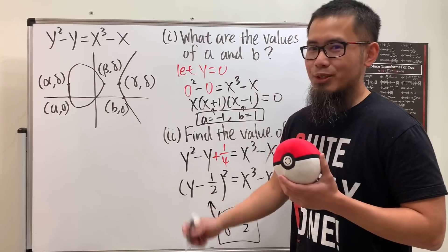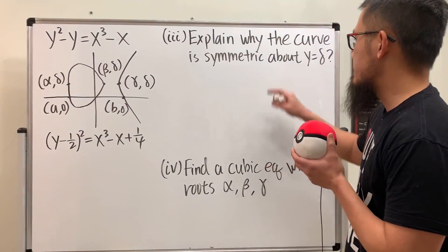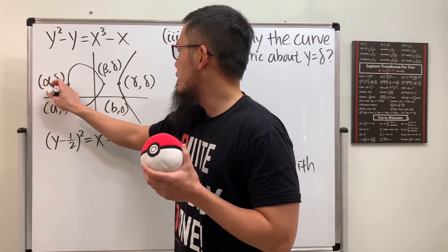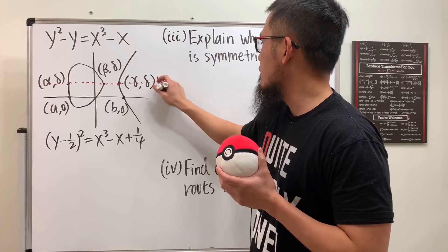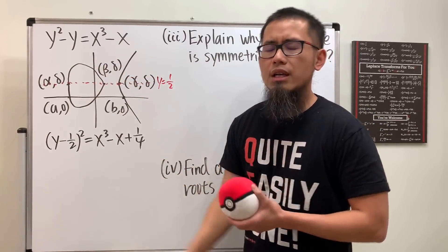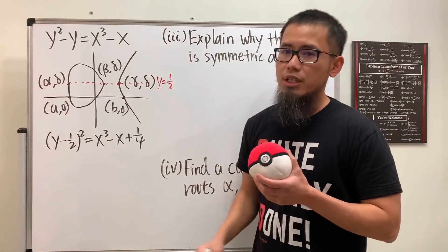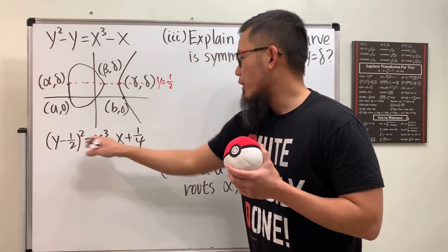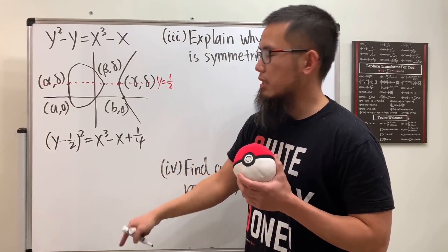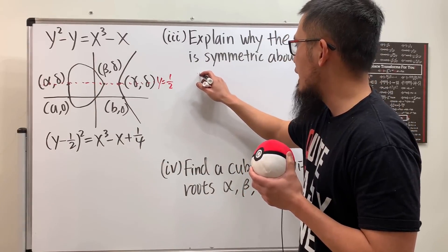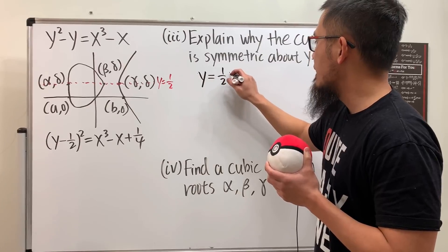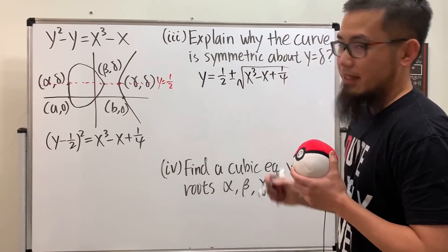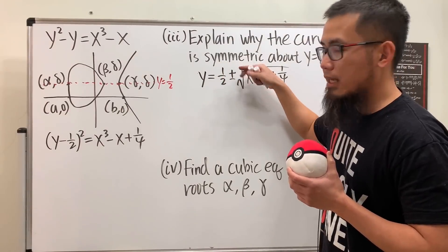For the next part we need to explain why the curve is symmetric about the line y = delta = 1/2. From the completed-square equation, we solve for y: take square roots on both sides (remembering ±) and bring -1/2 to the other side, giving y = 1/2 ± √(x³ - x + 1/4).